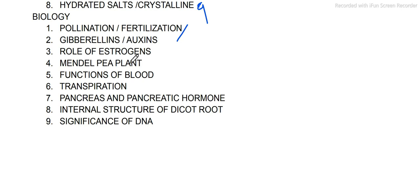Gibberellins, auxins, and the role of estrogens. Then Mendel's pea plant experiment, genetics as well. Functions of blood, transportation — human and plant transportation as well as functions of blood. Importance of transpiration in plants. Pancreas and pancreatic hormone, thyroid gland. Internal structure of dicot root — this is a government exam compulsory question. Then significance of DNA, also from genetics.